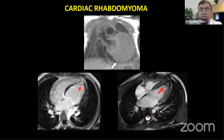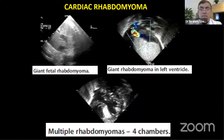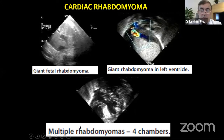Cardiac involvement can be a cause of death in these patients, in addition to CNS and other tumors. Cardiac rhabdomyoma is a killer disease affecting the heart, usually in children but also adults. Cases include fetal rhabdomyoma, giant rhabdomyoma of the left ventricle, and multiple rhabdomyomas of all four chambers of the heart.